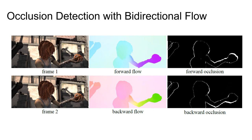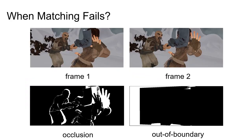The bidirectional flow can be used for occlusion detection with forward-backward consistency check. But the matching-based formulation is not able to handle all cases, since it implicitly assumes the corresponding pixels are visible on both images, and thus they can be matched by comparing their feature similarities. This assumption will be invalid for occluded and out-of-boundary pixels.